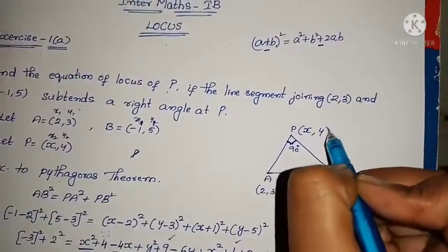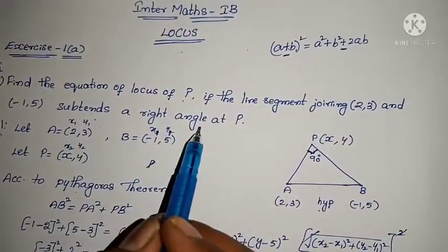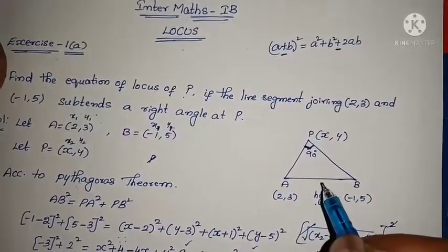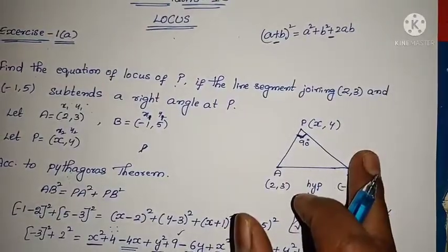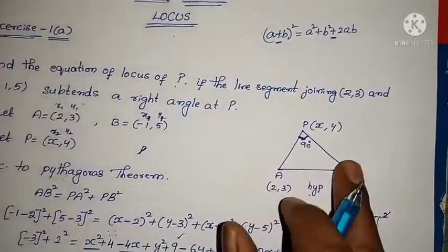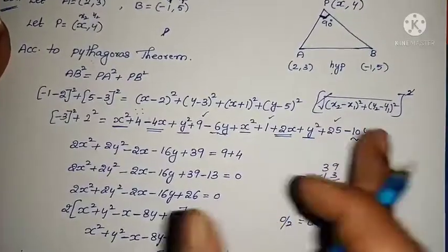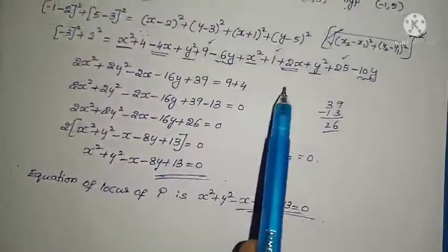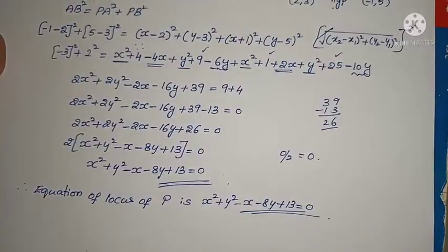Here we have point P = (x, y). The line AB subtends a right angle of 90 degrees at P — AB is the hypotenuse. According to Pythagoras theorem, hypotenuse² = sum of squares of the other two sides, i.e., AB² = PA² + PB². Distance formula: √[(x2 - x1)² + (y2 - y1)²]. Apply (a + b)² and (a - b)² formulas. It is a simple and easy problem.